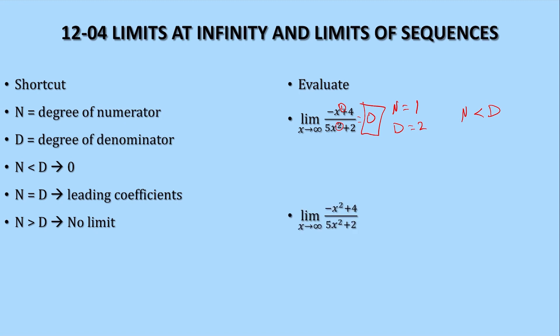Let's try another one. Here, the degree of the numerator is 2. The degree of the denominator is 2. And again, this only works when we're taking the limit at infinity, as x approaches infinity. So N equals D. So it is the leading coefficients, which would be those. That would be negative 1 over 5.